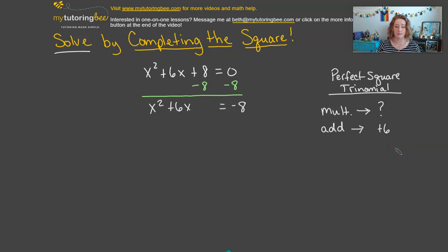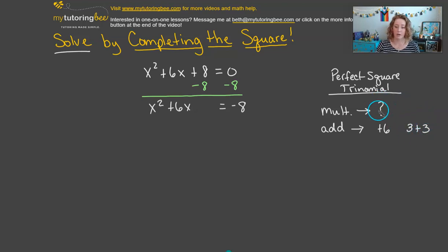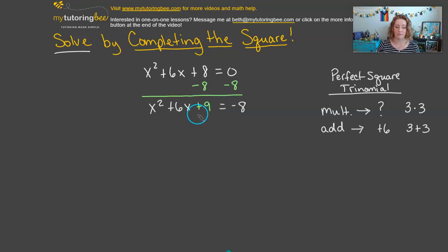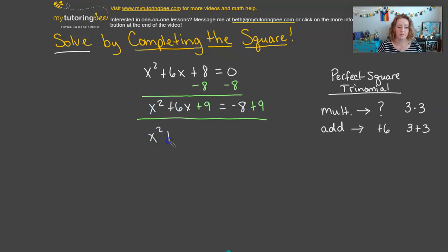We need two numbers that are the same and add to give us positive 6 — that would be 3 plus 3. So 3 times 3 gives us 9, and that's what we'll plug in as our third term. We can't just add 9 to the left side — we have to add 9 to the right side as well, following algebra rules. So we get x squared plus 6x plus 9 equals negative 8 plus 9, which is positive 1.